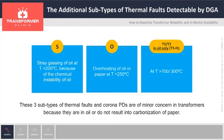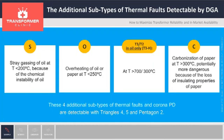Then, there are four additional subtypes of thermal faults, which are detectable with Triangle 4, 5, and Pentagon 2: stray gassing of oil S below 200°C, overheating O of oil or paper below 250°C, high temperature hotspots T3/T2 in oil only, also called false T3H. These three subtypes of thermal faults are of minor concern in transformers, because they are either in oil only, or they do not result in carbonization of paper. Finally, false C, with possible carbonization of paper, which are potentially more dangerous because of the loss of insulating properties of paper when it is carbonized.